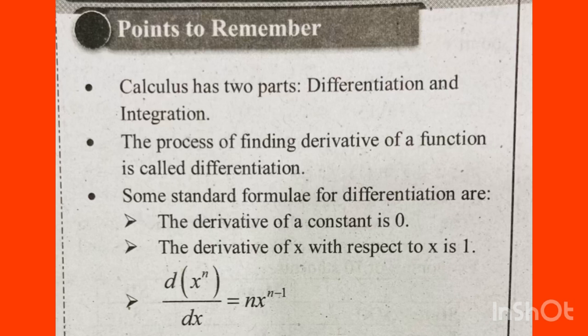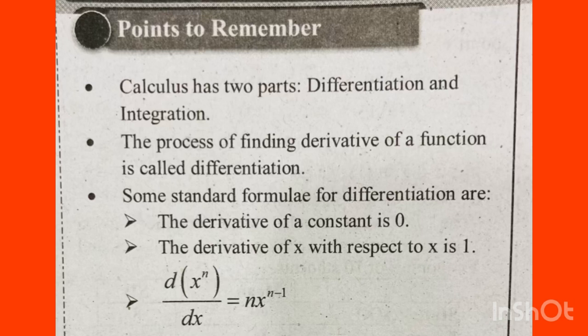A constant derivative is zero. The derivative of x is 1. The power rule states that d of x raised to n, divided by dx, is equal to nx raised to n minus 1. That is a very important formula.